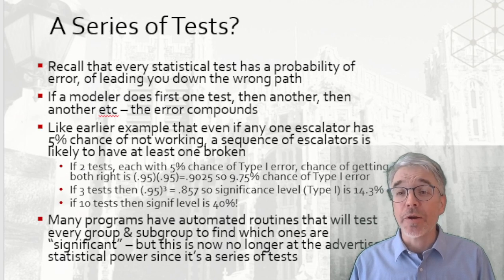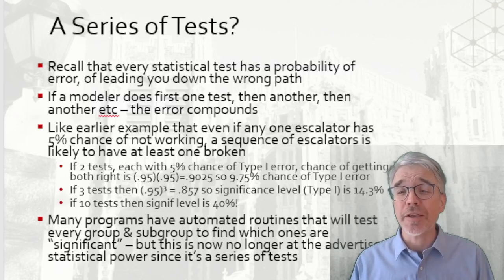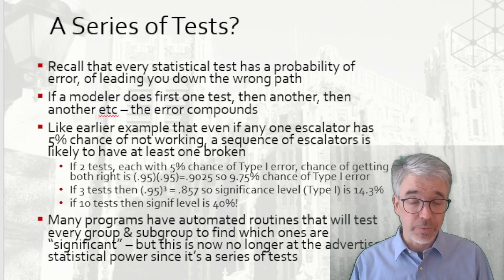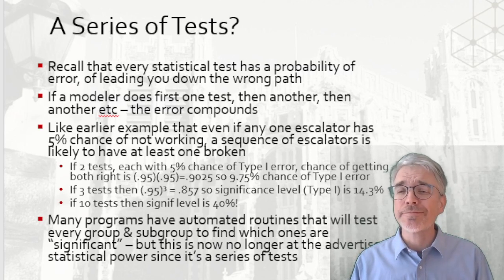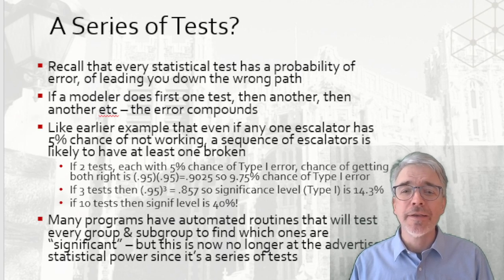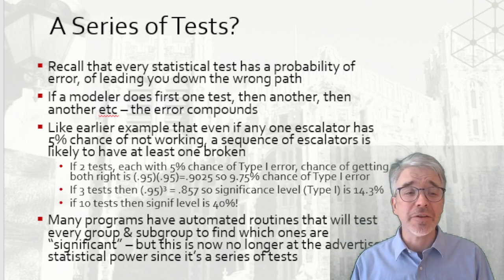The worst part is that a lot of computer stats programs have automated routines that test every group and subgroup to find a so-called significant difference. It's no longer actually the advertised statistical power — you're doing a series of different tests, so buyer beware. Sometimes people do this knowing they're doing it wrong; other times they don't even realize the testing doesn't work quite the way they think it does.